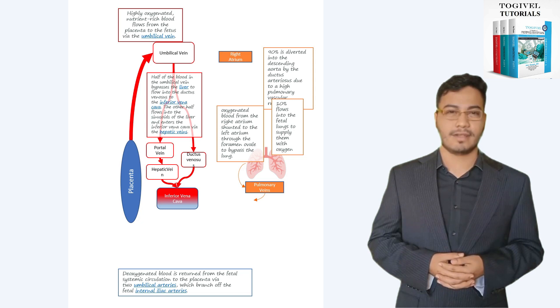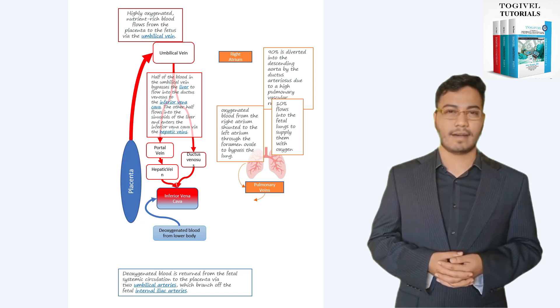Now, the relatively deoxygenated blood from the liver flows into the inferior vena cava. The inferior vena cava also receives less oxygenated blood returning from the lower body. The oxygen content of blood delivered to the heart from the inferior vena cava is thus lower than the well-oxygenated blood in the umbilical vein.